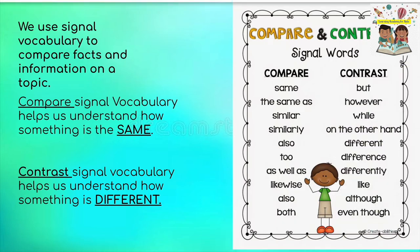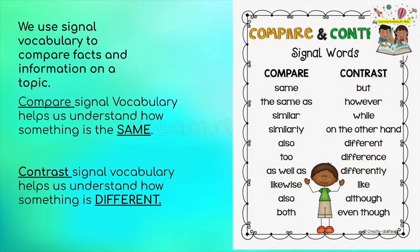We use signal vocabulary to compare facts and information on a topic. Compare signal vocabulary helps us understand how something is the same. Contrast signal vocabulary helps us understand how something is different. There are some signal words that we use while we are comparing and contrasting.